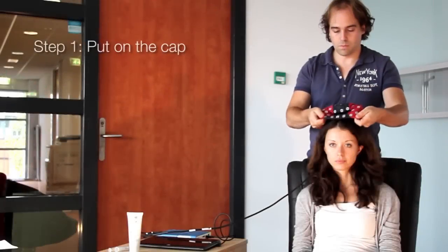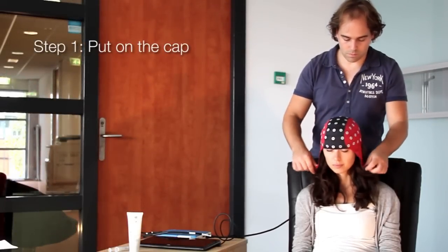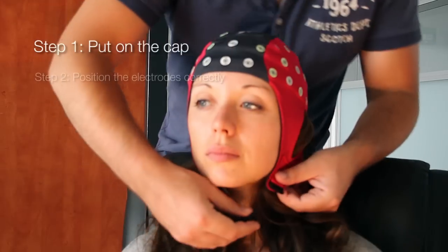Place the frontal electrodes on the forehead first and then gently pull the cap back and over the head. Fasten the cap using the chin strap.